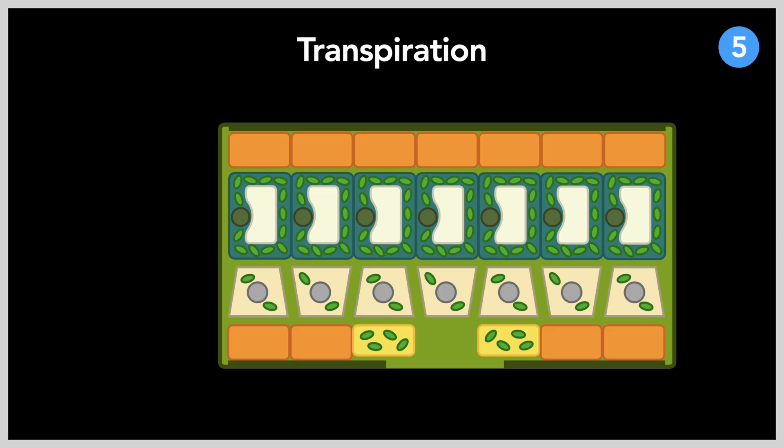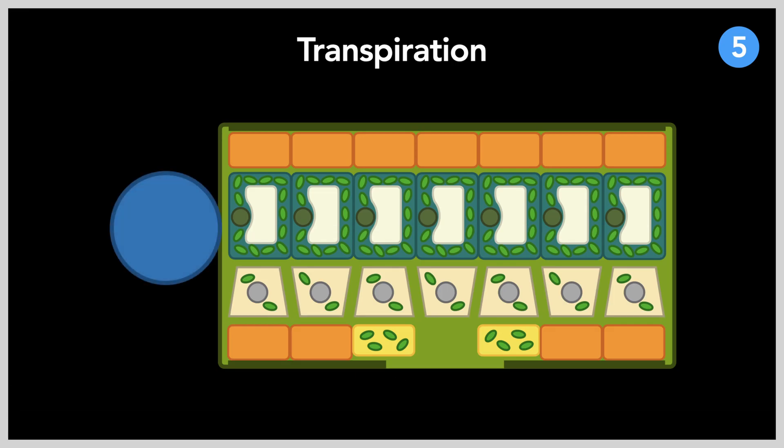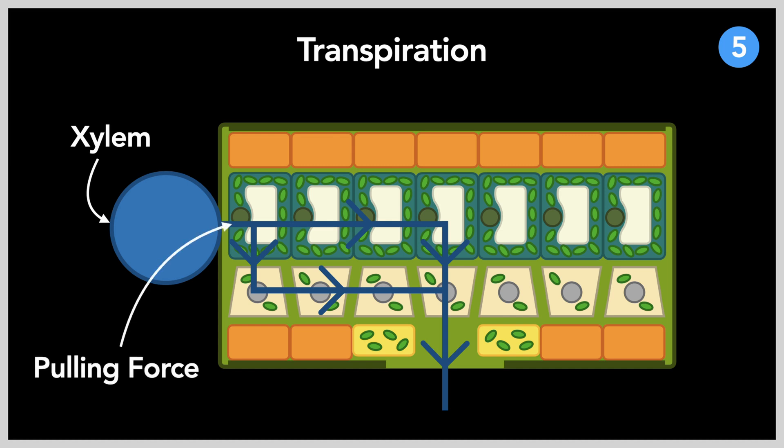When transpiration occurs, the water coating the cells of the palisade and spongy mesophyll will start to dry up. Water from the xylem vessels will have to be diverted to replenish this loss of water. Since water molecules tend to have strong mutual attractive forces in liquid form, this constant need and loss of water acts similar to a pulling force. A constant supply of water from the root hair cells is also required for this process to occur.